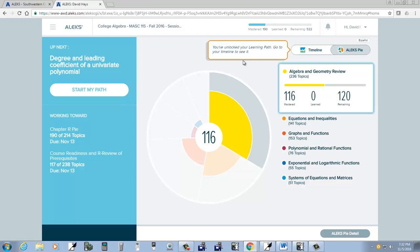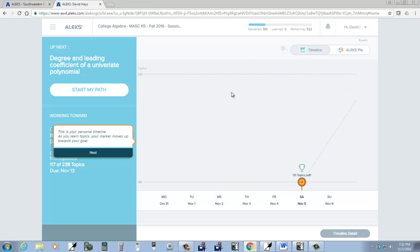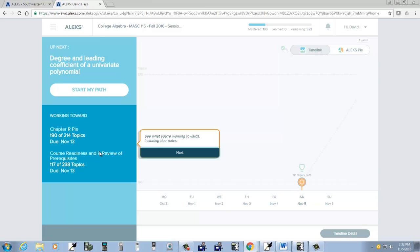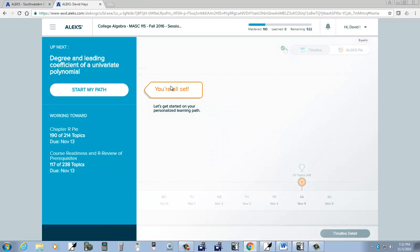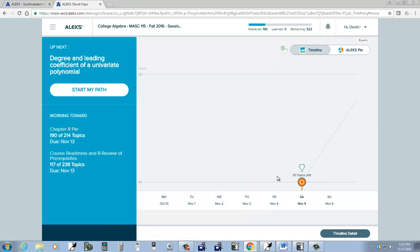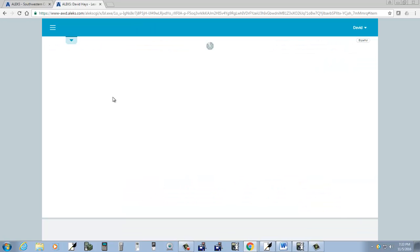You've unlocked your learning path. Go to your timeline to see it. If I click the timeline. Personal timeline. See what you're doing. You're all set. So it comes up here. And you'll see where it tells you what's going on. What's coming up next. Now as we go on. And you're doing material. Like if I start my path.